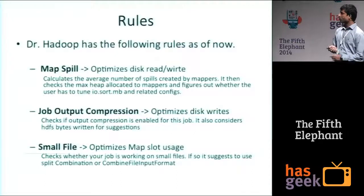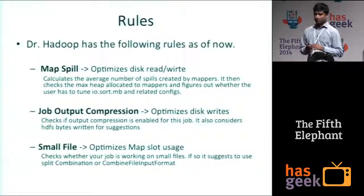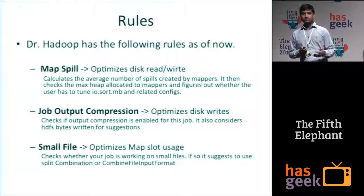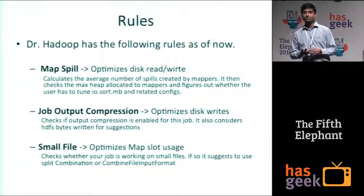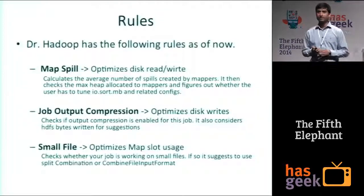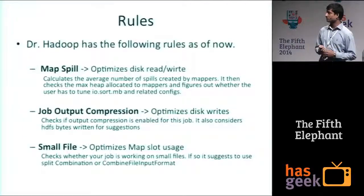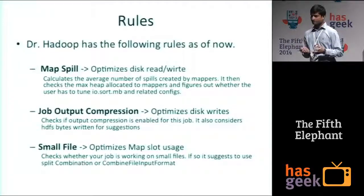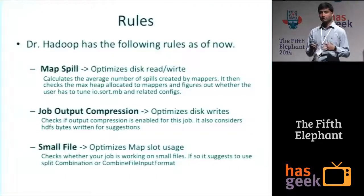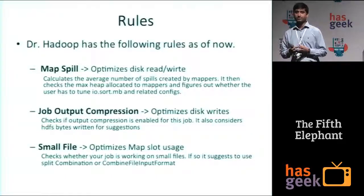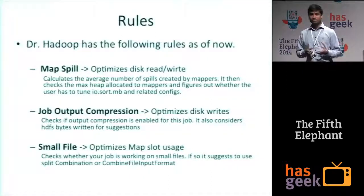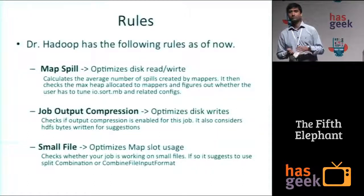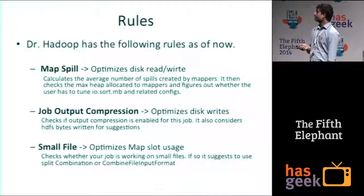Then there is the small file problem. This is a typical problem from both the NameNode and MapReduce perspectives. When you are working on very small files, you end up creating thousands of mappers and losing time on the initialization overhead per mapper. The rule takes into consideration how much data your job is working on and how many mappers you have created, finds out whether your job is really working on small files, and gives you the recommendation to use CombineFileInputFormat and other related parameters.